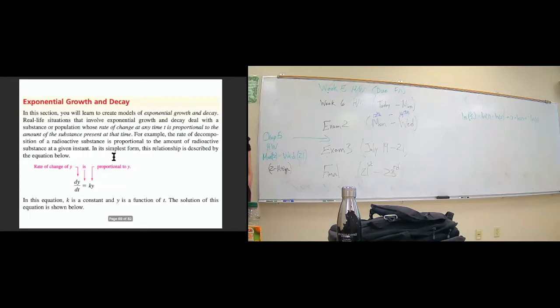For right now, we can think of this funny little s symbol as undoing the derivative. And if you undo the derivative here, what you have is the ln of y, because what gives you 1 over y as a derivative? The ln of y does. And what gives you a constant as a derivative? Something times a constant.